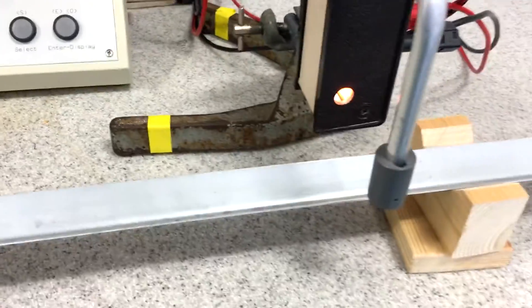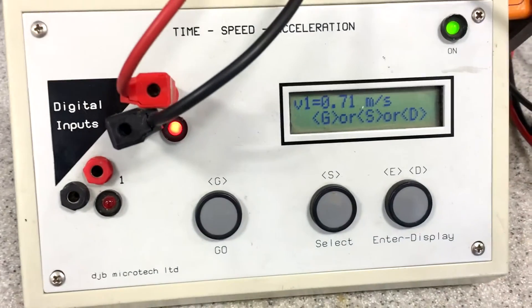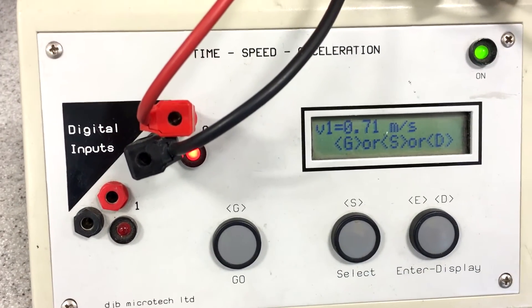Speed that went through the light gate: 0.71 meters per second.